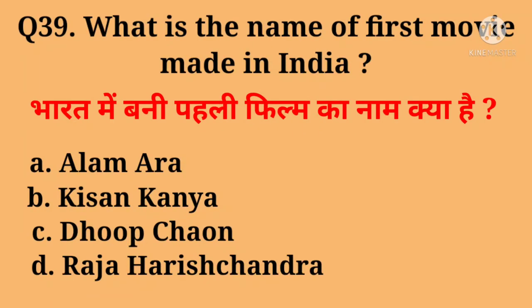Question number thirty-nine: What is the name of the first movie made in India? Right answer is Raja Harishchandra.